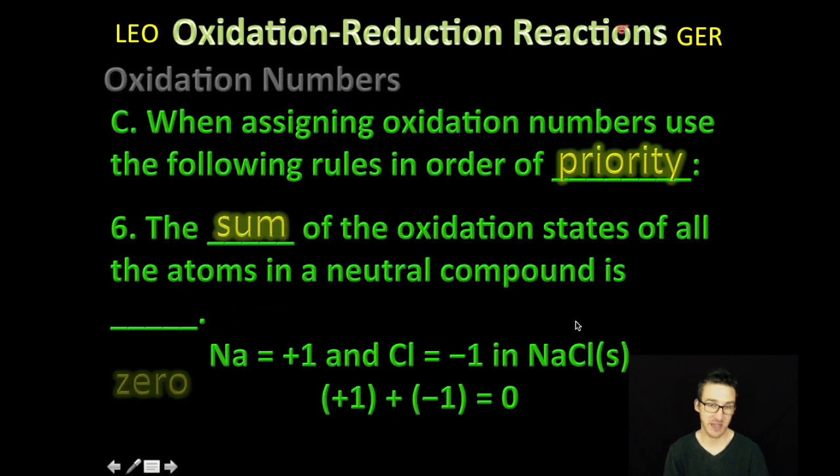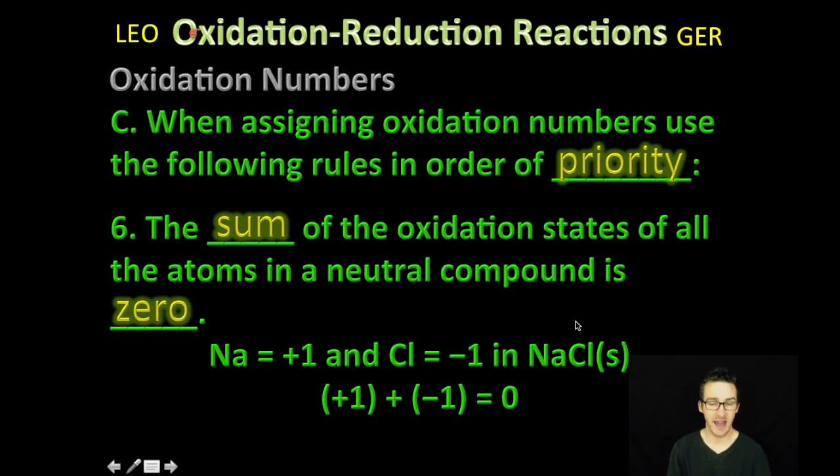And rule number six. The sum of the oxidation states of all of the atoms in a neutral compound is zero. So, for an ionic compound, very straightforward there. Sodium is plus one. Chlorine is minus one. The sum of those numbers is zero.